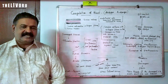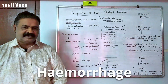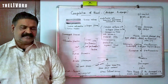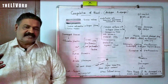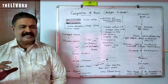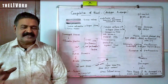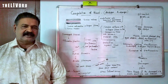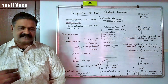Bleeding occurs — bleeding is the loss of blood, and that is called a haemorrhage. When haemorrhage occurs, the blood should get coagulated within 3 to 10 minutes, maximum 10 minutes. If haemorrhage occurs, loss of blood takes place, so coagulation must happen promptly.